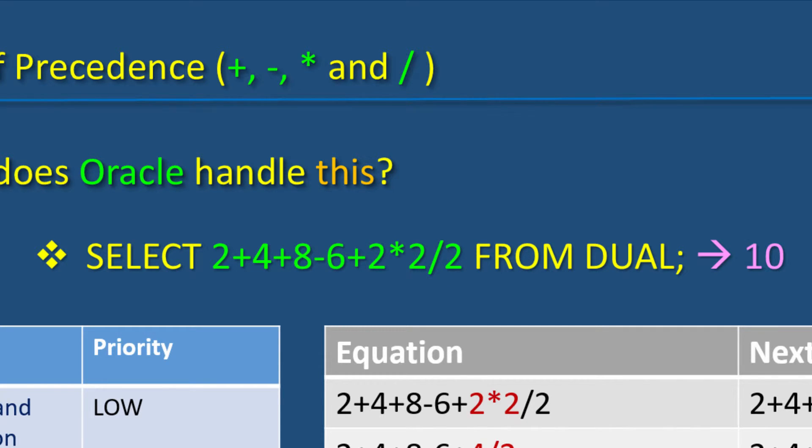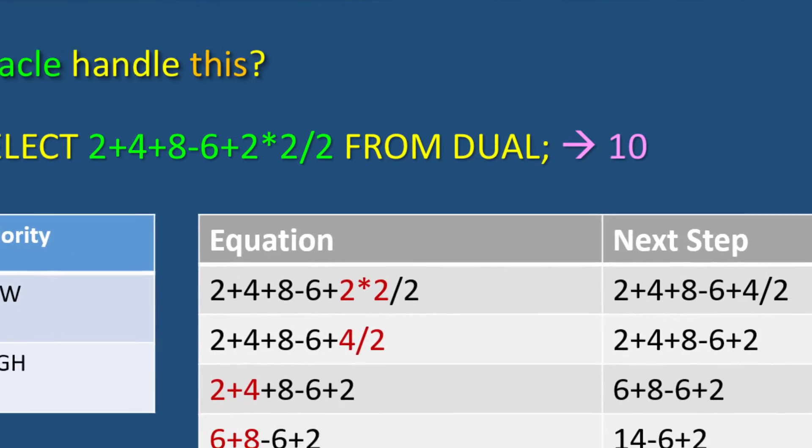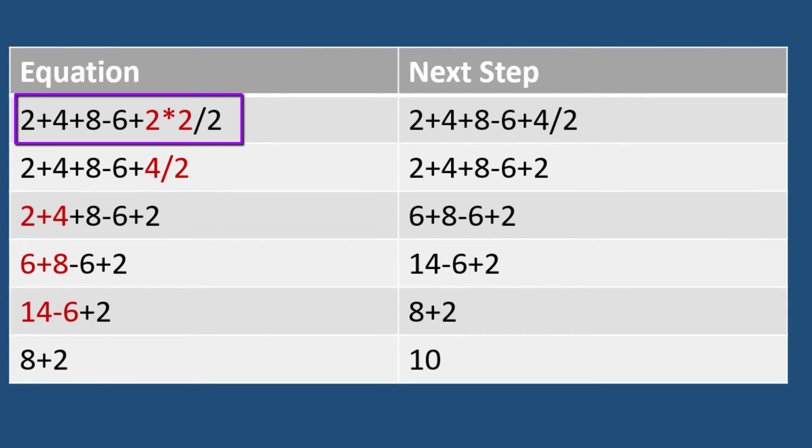The calculation happens from left to right when it comes to equal level arithmetic operators. So, 2 plus 4 plus 8 minus 6 plus 2 times 2 slash 2 will become 2 plus 4 plus 8 minus 6 plus 4 divided by 2. Then, 4 divided by 2 becomes 2.